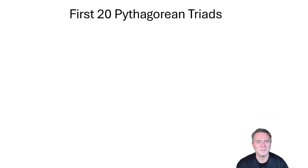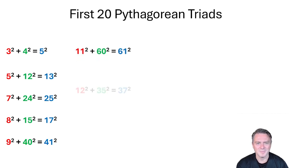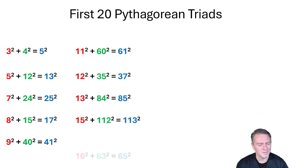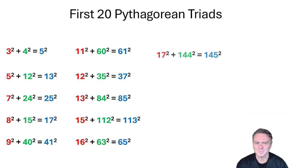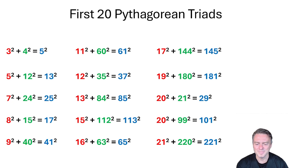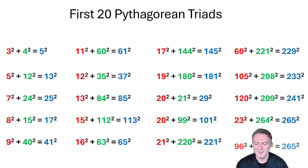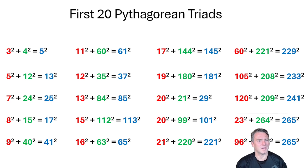The first 25 Pythagorean triads start with 3-4-5, then 5-12-13, 7-24-25, 8-15-17, and then 9-40-41. The list continues through values with smallest sides of 11, 12, 13, 15, 16, 17, 19, 20, and 21, getting progressively larger. One of the homework questions was to find all the triplets that had at least one side below 100.